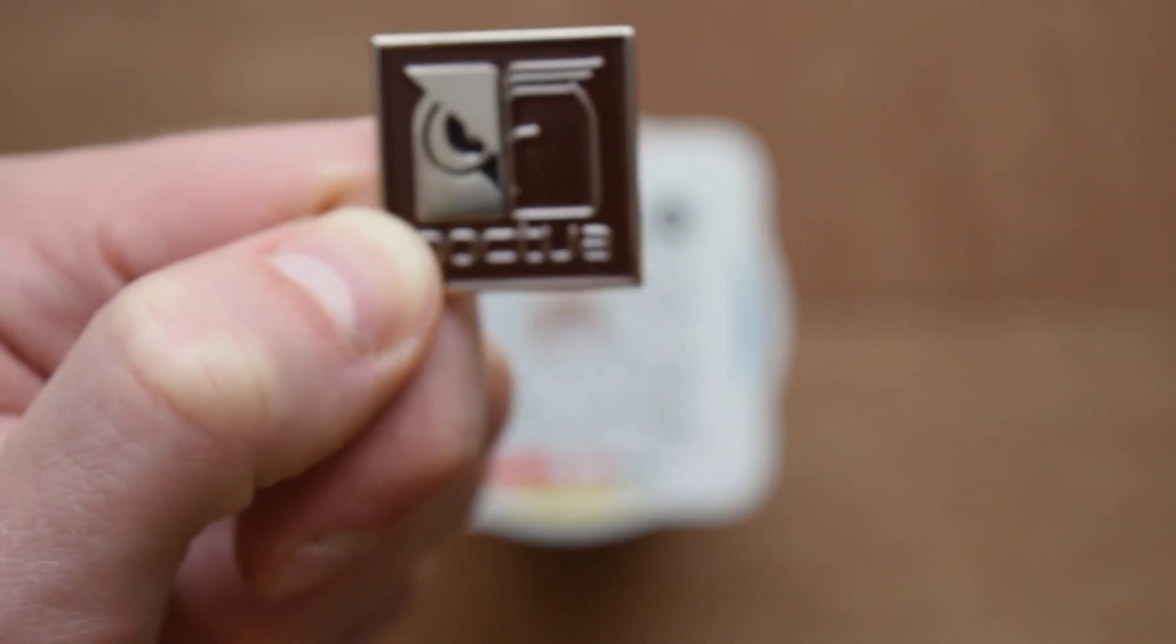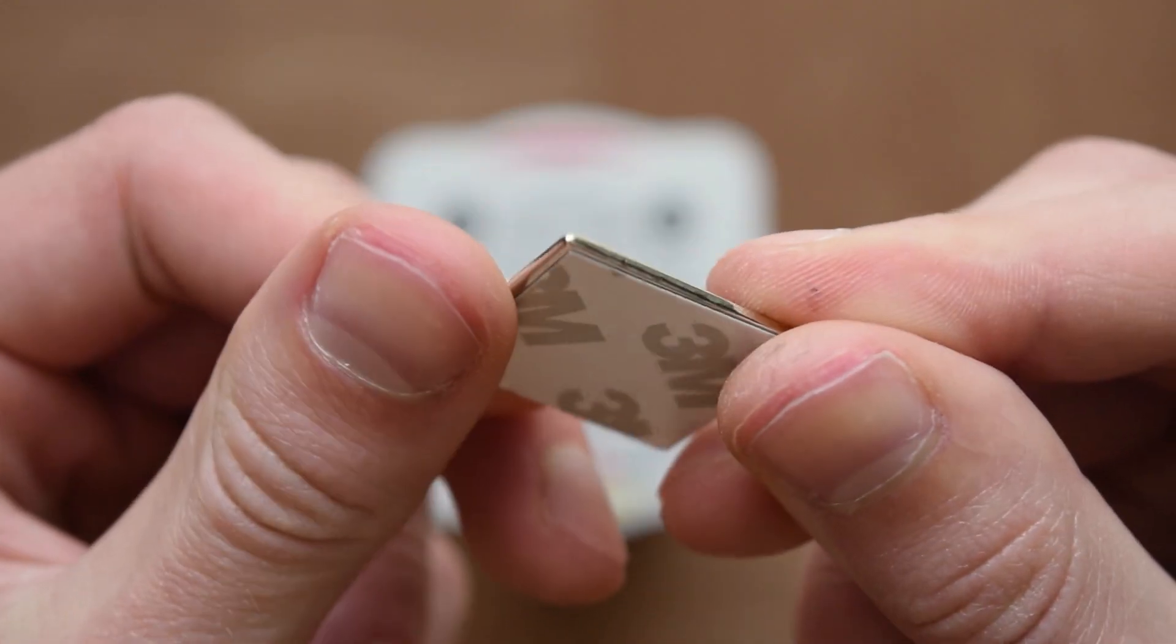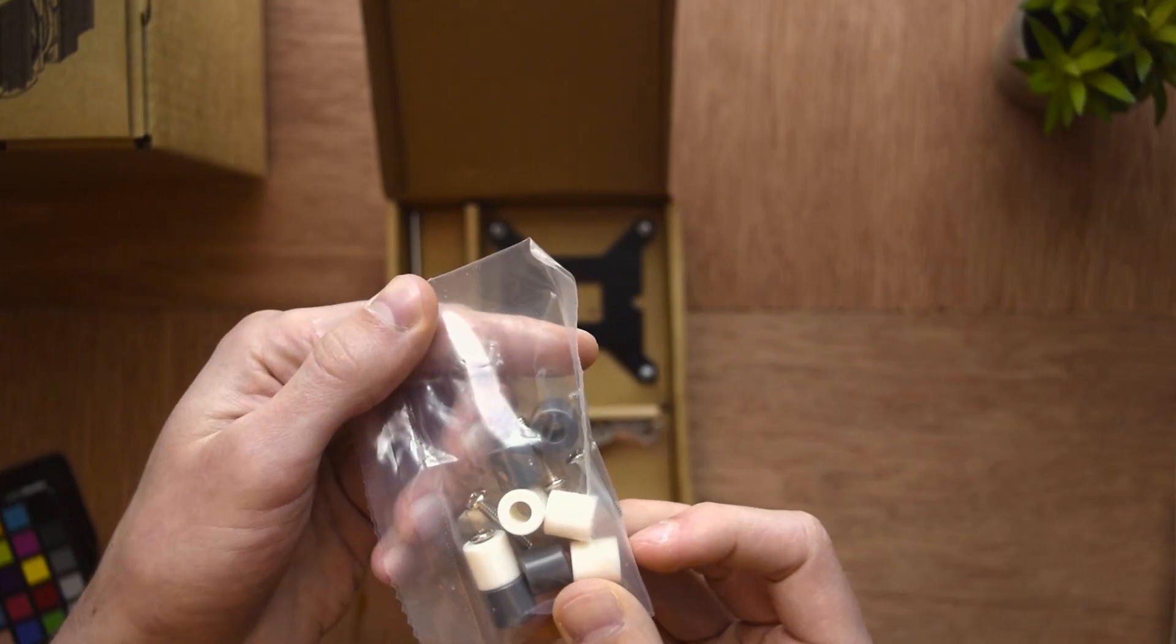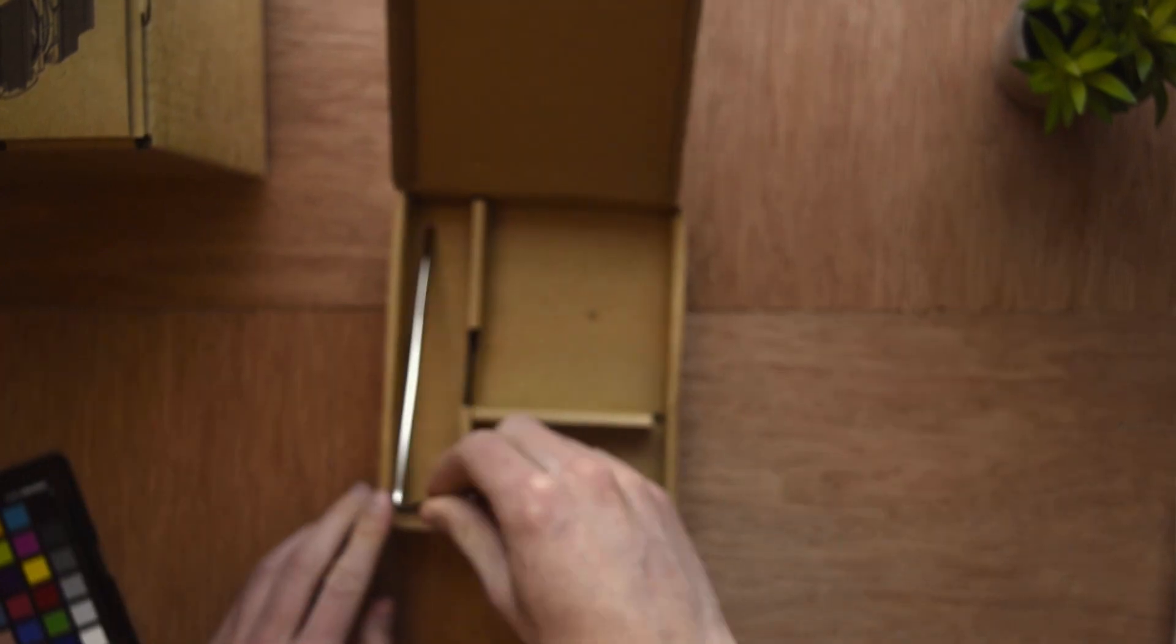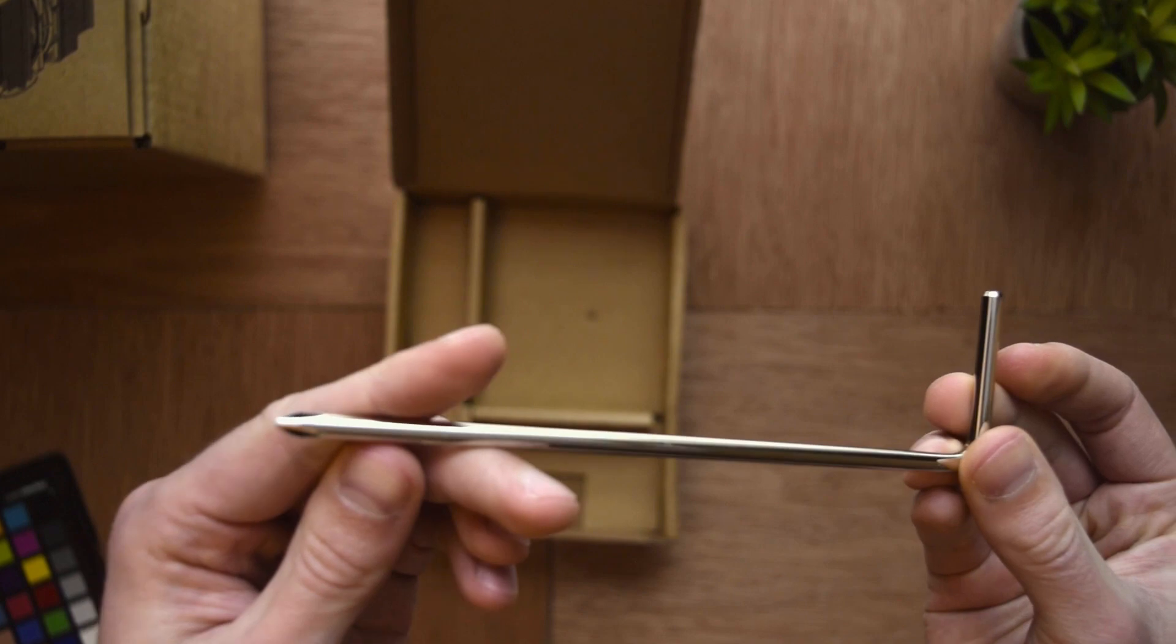We also get a few bonus items inside the box: a Noctua sticker that is just as well constructed as their cooler and a long screwdriver for installing the cooler itself. Now if you're into long screwdrivers and well constructed stickers you can check out the cooler using the link down below the like button.